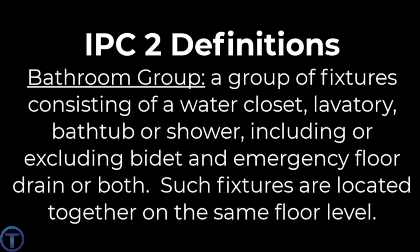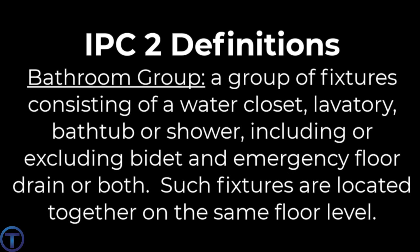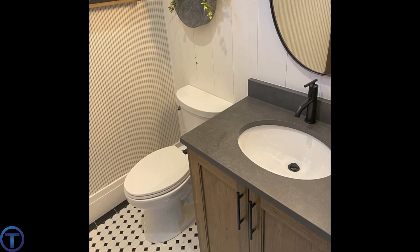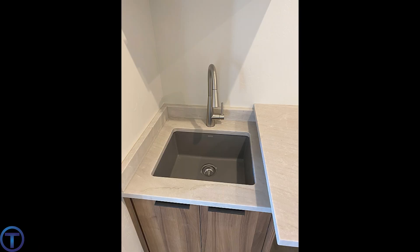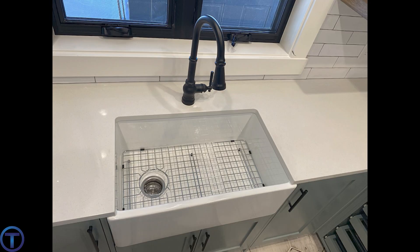Let's have another quick look at the definition from the International Plumbing Code, chapter two definitions. Bathroom group: a group of fixtures consisting of a water closet, lavatory, bathtub or shower, including or excluding a bidet and emergency floor drain. Such fixtures are located together on the same floor level. We would only be connecting bathroom group fixtures to the horizontal wet vent — excluding a nearby laundry sink, washer connection, kitchen sinks, or anything else like that.